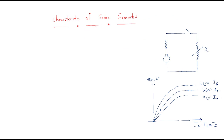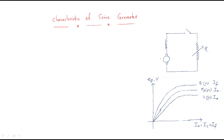Next we discuss the characteristics of the series generator. In the series generator, as the name suggests, both the armature (A terminals) and the field (F terminals) are connected in series. This series-connected machine is called the series generator, and we connect a load to it for analysis.